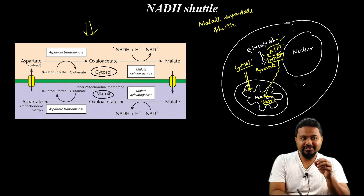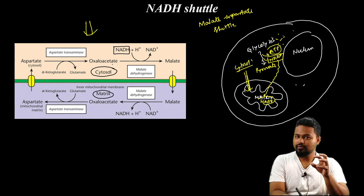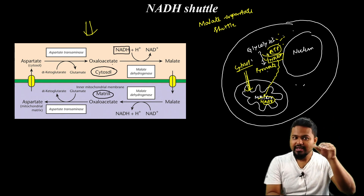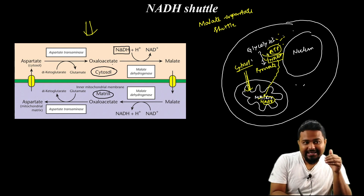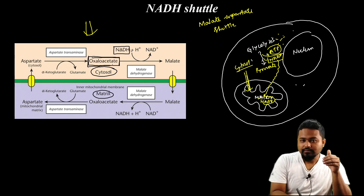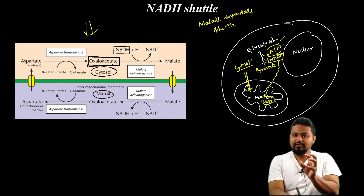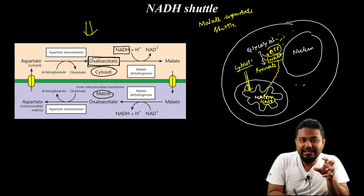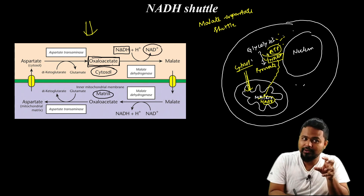NADH is in the cytosol. NADH is produced during glycolysis. NADH acts on oxaloacetate, and NADH donates its hydrogen and electron, converting NAD positive.